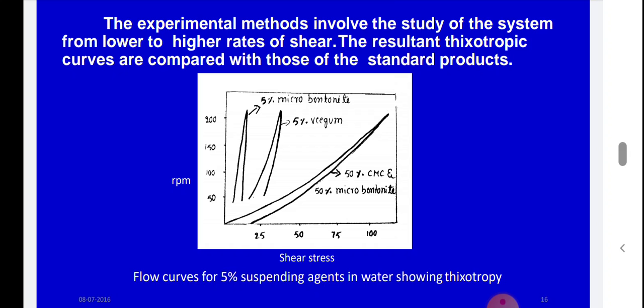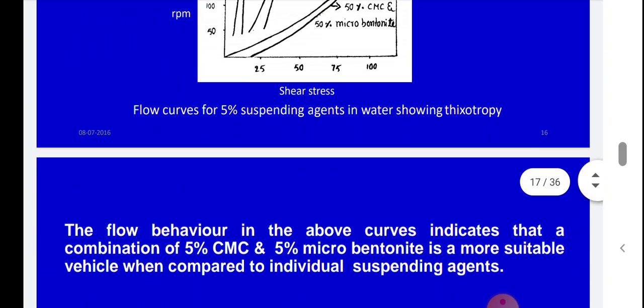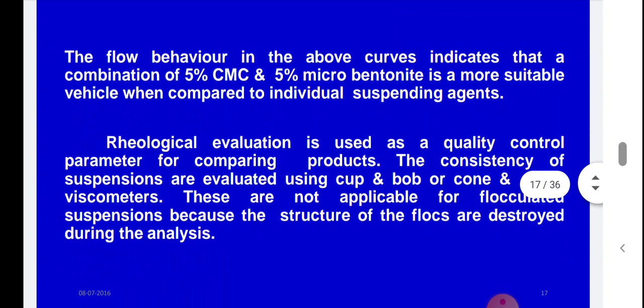When the concentration of solids is different, it will show different types of flow properties — for example, 50% CMC and 50% microbentonite, versus 5% vigam and 5% microbentonite. The viscosity and flow properties change completely. It may show dilatant flow or plastic flow, and if the solid content is very low, it shows Newtonian flow.